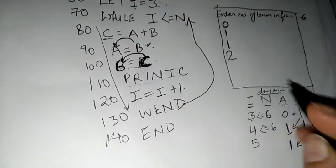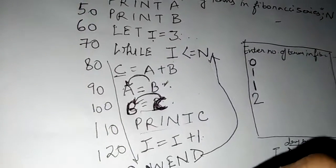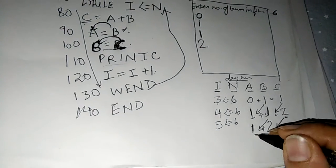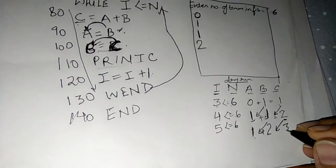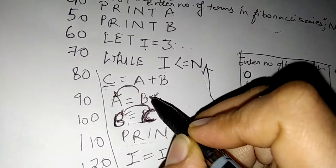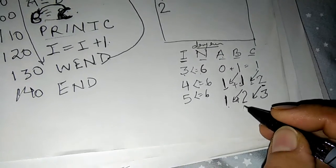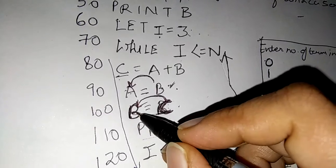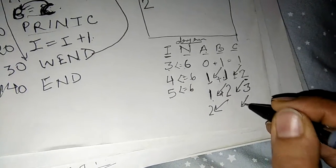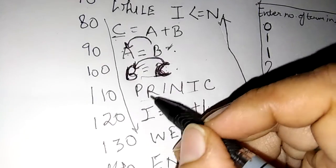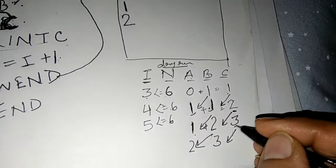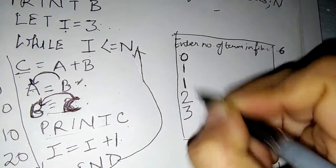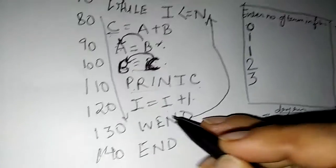C becomes A plus B. Now A is 1 and B is 2, so C becomes 3. Again swapping: the value of B is stored in A — that is 2 is stored in A. The value of C is stored in B — that is 3 is stored in B. Again the value of C is printed. C was 3 last time, so 3 is printed — this is the fifth term of the series. I becomes I plus 1, so I becomes 6.